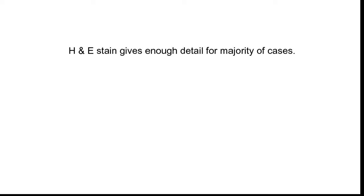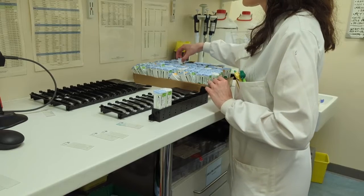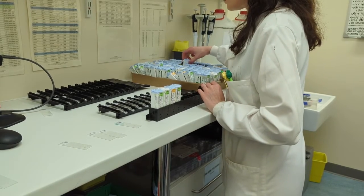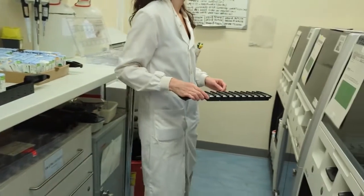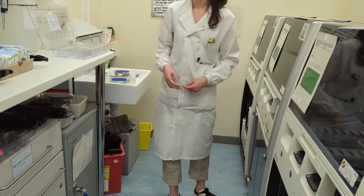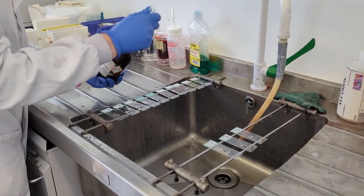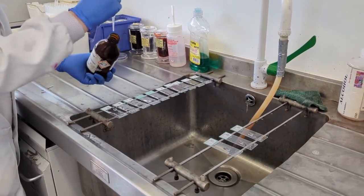The haematoxylin and eosin stained slides enable a diagnosis to be made in the majority of cases. However, extra testing is required for more complex cases or to visualise aspects of the tissue not possible with routine staining. Immunohistochemistry utilises antibodies to target and visualise specific tissue components, and is mostly used to diagnose different types of cancer. The process involves cutting further sections from the block and staining using automated machines; the stained slides are checked by a BMS before being issued to a pathologist. Another technique is special staining, which can stain for specific components to aid diagnosis or staging of diseases.